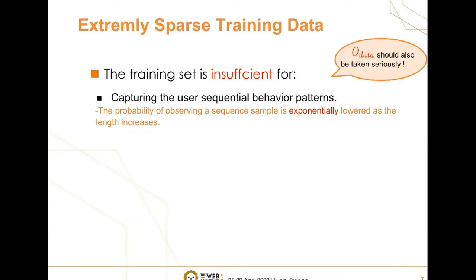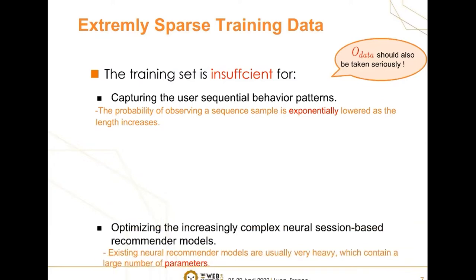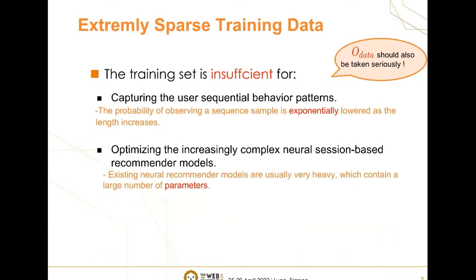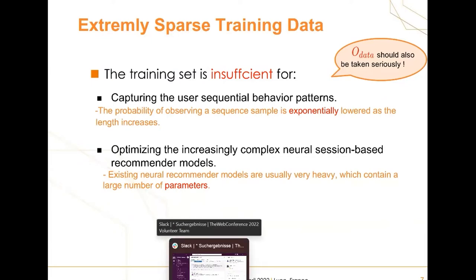Intuitively, the probability of observing a sequence sample is exponentially lowered as the length increases. Meanwhile, recent neural recommender models usually contain a large number of parameters.